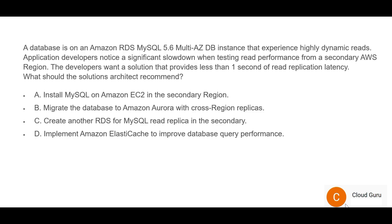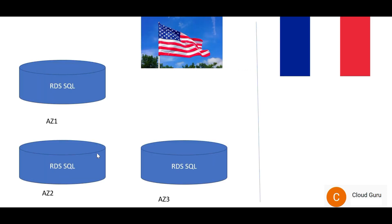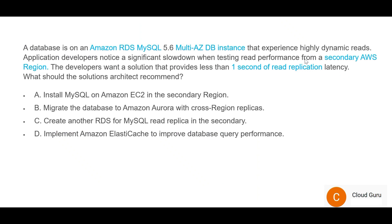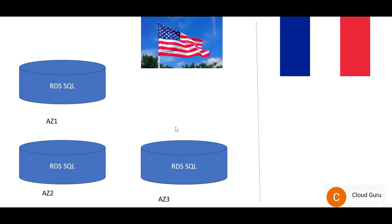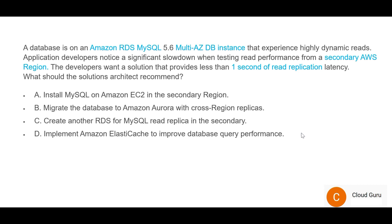Let's move to question 49. We have an RDS MySQL database on a multi-AZ DB instance that experiences highly dynamic reads — sometimes very high, sometimes normal. Application developers are noticing a significant slowdown when testing read performance from a secondary AWS region, for example France. The developers want a solution that provides less than one second of read replication latency, meaning the databases across regions should have the same data within a second.